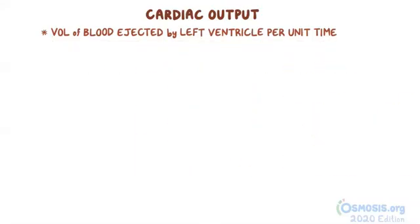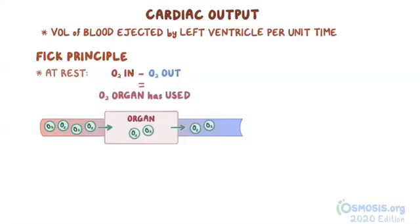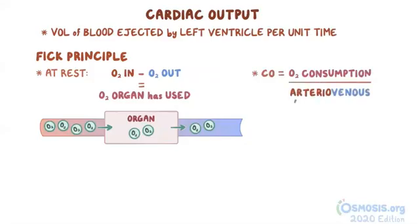Another way to calculate cardiac output is by using the Fick principle, which simply states the oxygen going into an organ minus the oxygen left out of an organ must equal how much oxygen that organ has used. Using the Fick principle equation — cardiac output equals oxygen consumption divided by arteriovenous oxygen difference — cardiac output can be calculated. Both methods render normal cardiac output to around 5 liters per minute on average.